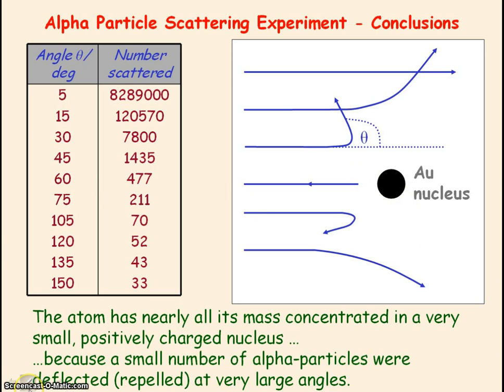That repulsion force is Coulomb's law of electrostatics. We needed to use a gold nucleus because it has enough charge to produce a large enough electrostatic force of repulsion to get observable deflecting angles for the alpha particles.